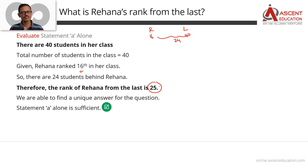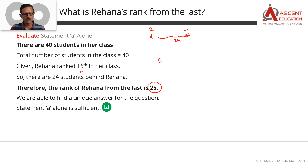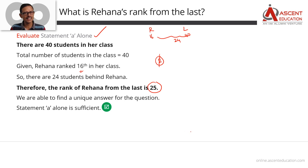So using Statement A, we've been able to get a unique answer. Statement A alone is sufficient. This means answer options 1 or 4 are possible — either A alone is sufficient (option 1) or each statement is independently sufficient (option 4). We can know that option 3 is not needed.